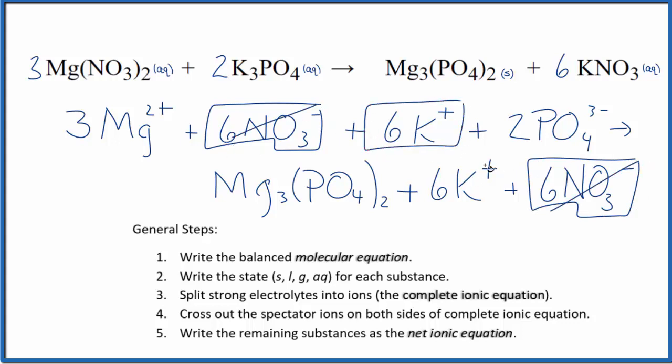Six potassium ions. And again, in the products, six potassium ions, spectator ions, we cross them out. What's left, that's the net ionic equation for magnesium nitrate plus potassium phosphate.